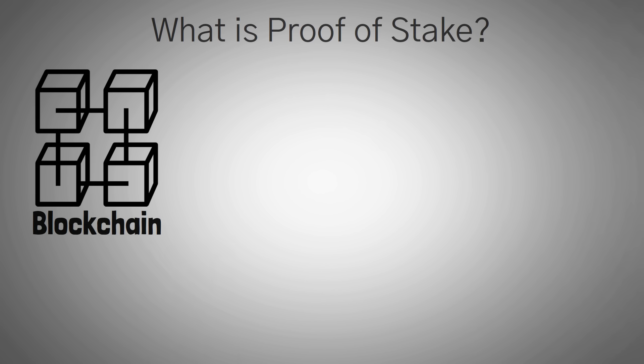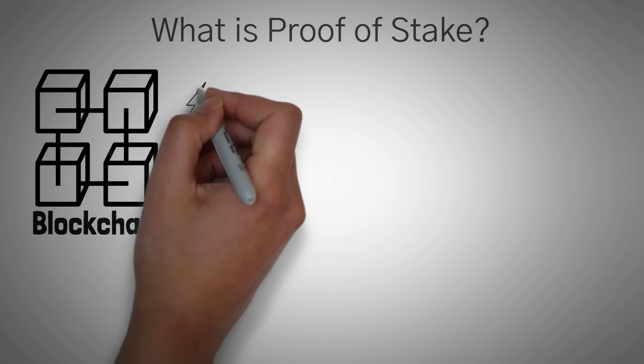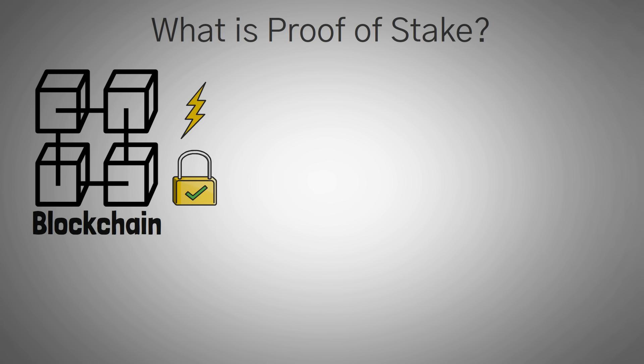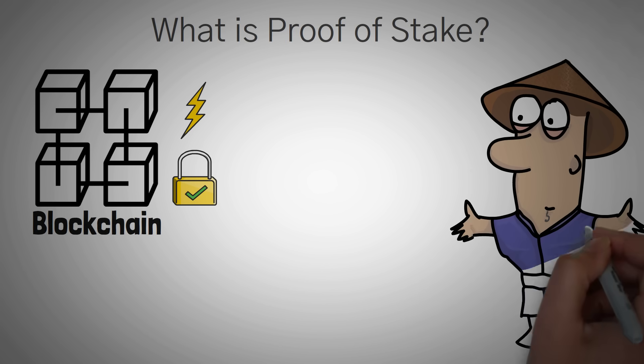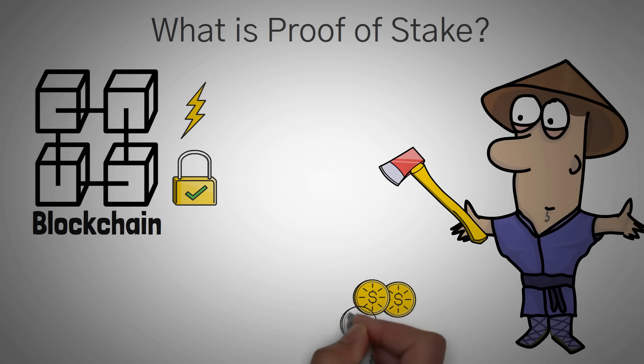Proof-of-stake is a blockchain verification method that is much more energy-efficient and less risky than the more common proof-of-work method. Only one miner is chosen at a time to validate the blockchain, but that miner must lock up some of their coins as collateral to be chosen.